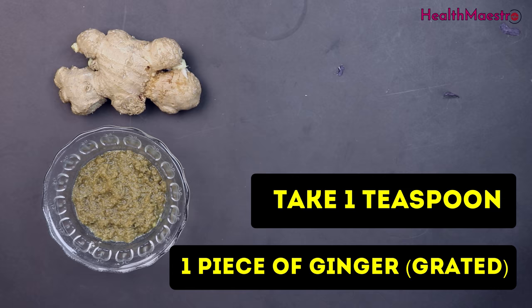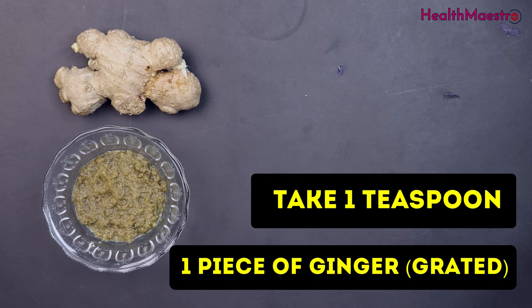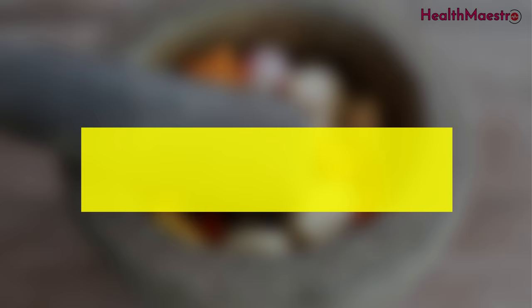Things you need: one piece of ginger, grated; one garlic clove, grated; two tablespoons of lemon juice; one tablespoon of apple cider vinegar; two tablespoons of honey.